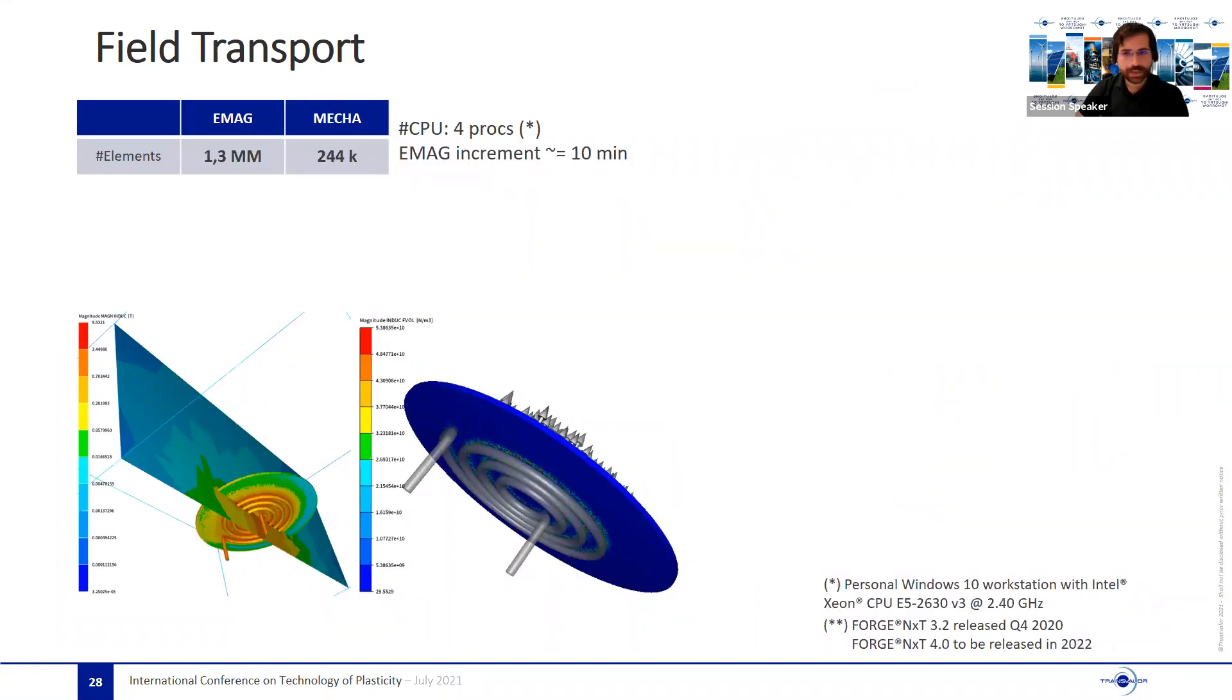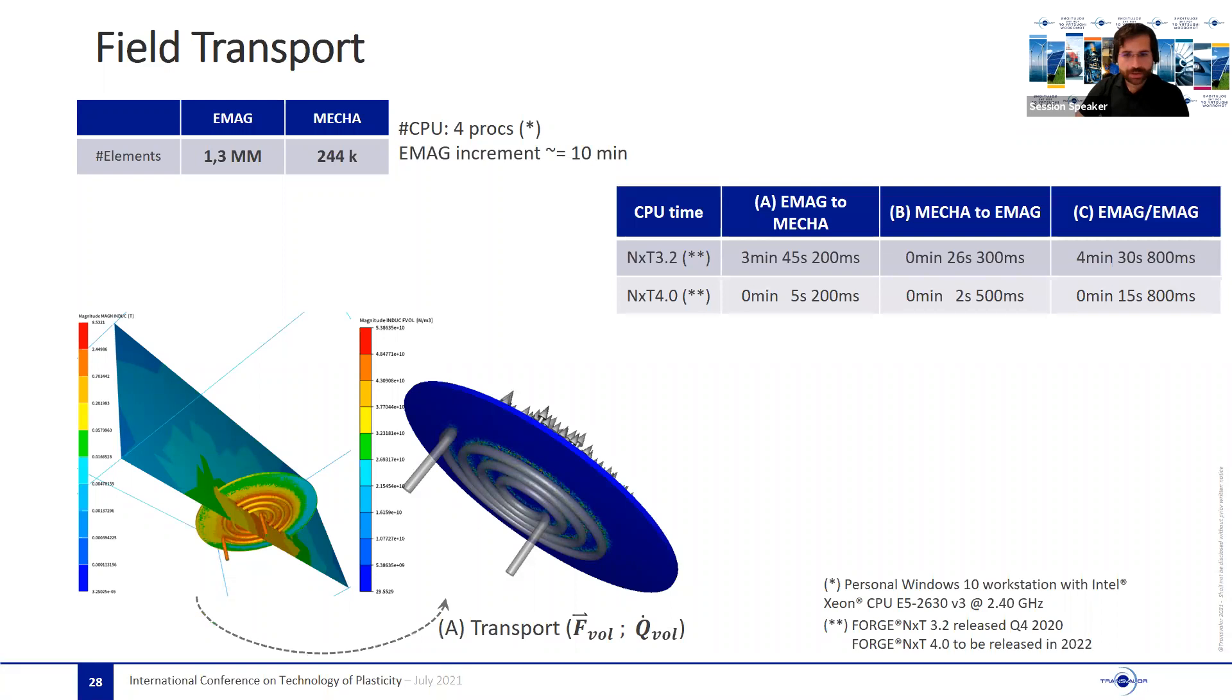In this example, it is shown the gain of performance with the novel developments on a magnetic pulse forming example. The electromagnetic mesh is composed of more than 1.3 million tetrahedral elements, while the thermomechanical mesh has more than 200,000 elements. This computation was run on four CPUs of a local workstation. Let's take as reference the CPU time used for evaluating the first electromagnetic time step, about 10 minutes. It is observed that the data transfer from the electromagnetic solver to the mechanical solver, meaning the Lorentz forces, eddy current frequency and the Joule heating term took before, in the previous version, around three minutes and we reduce it to five seconds.